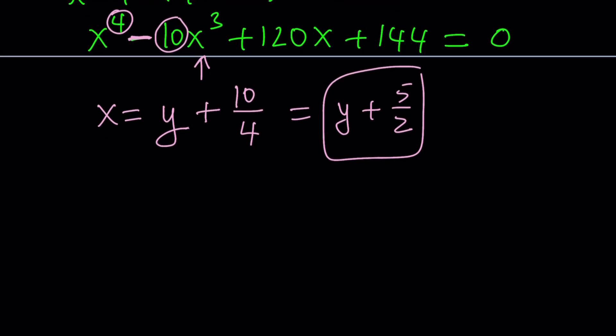x to the 4th plus ax squared. x squared is going to be there because what's going to happen is x cubed is going to disappear. Actually, I should probably write in terms of y. So, let's just say we get something like y to the 4th plus ay squared plus by plus c equals 0.